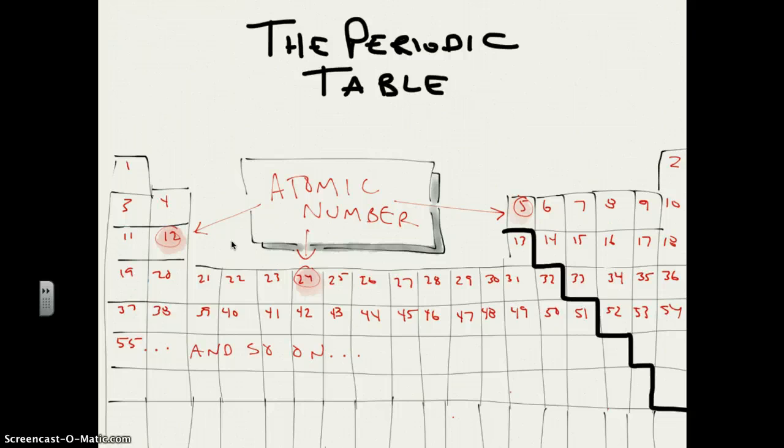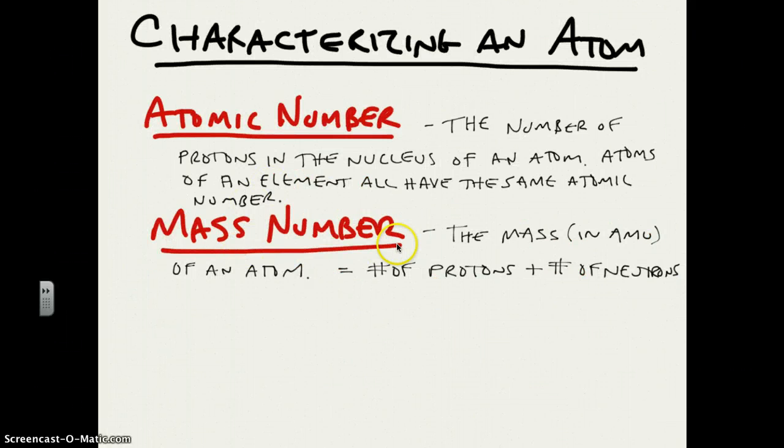The other thing we can now characterize about atoms is something known as the mass number, something about how heavy they are. Most of the mass is contributed by the protons and neutrons. So the mass number in AMU, atomic mass units, is the sum of the number of protons and neutrons in the nucleus.